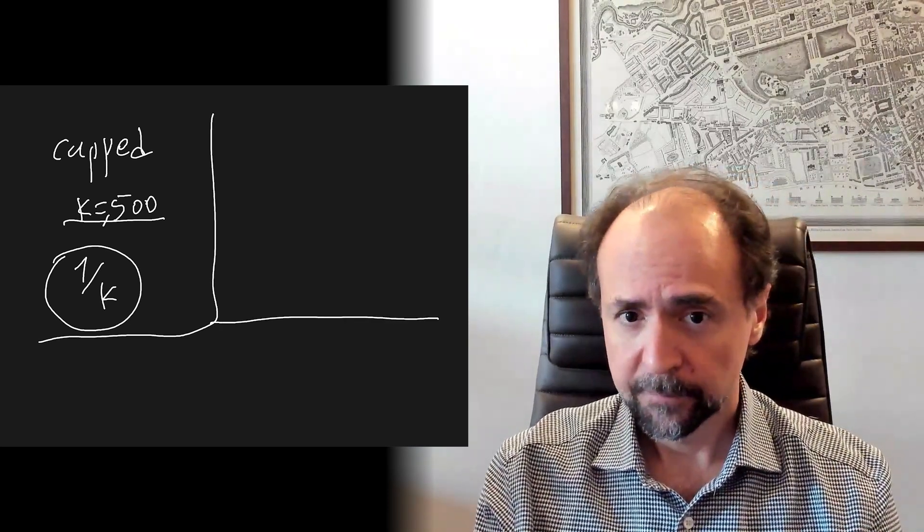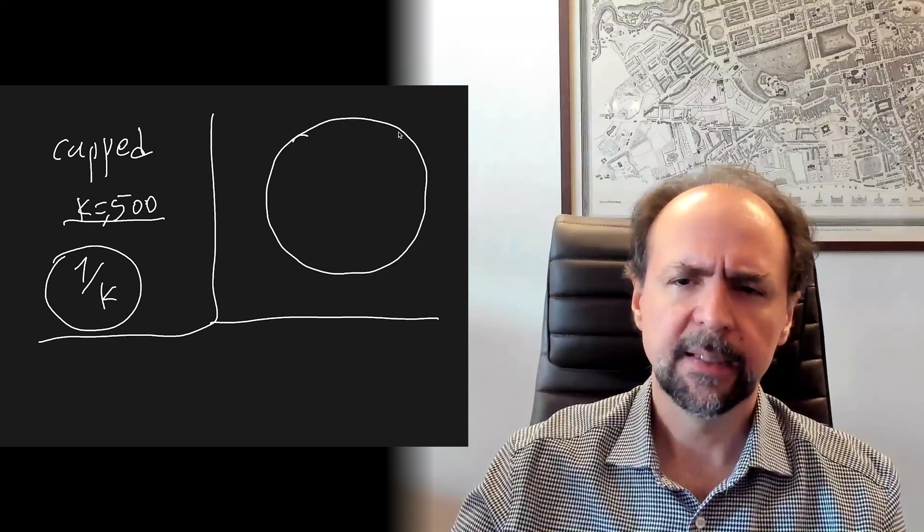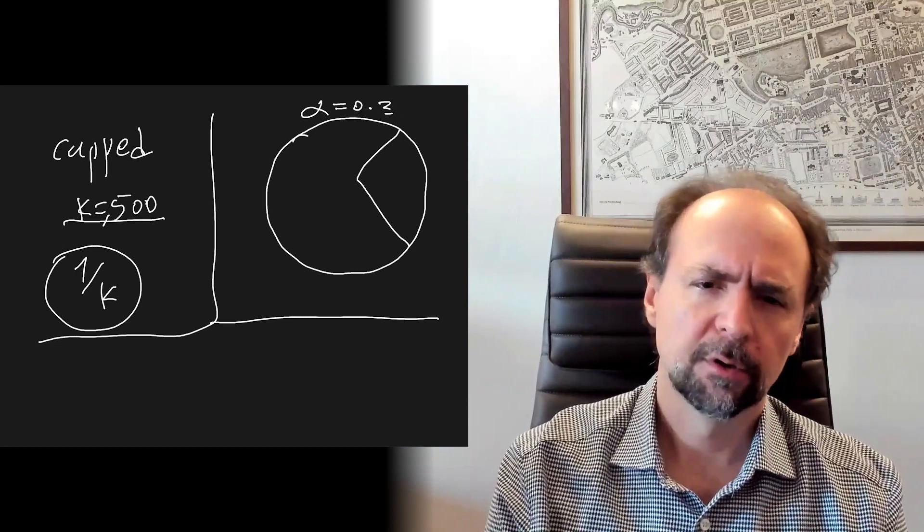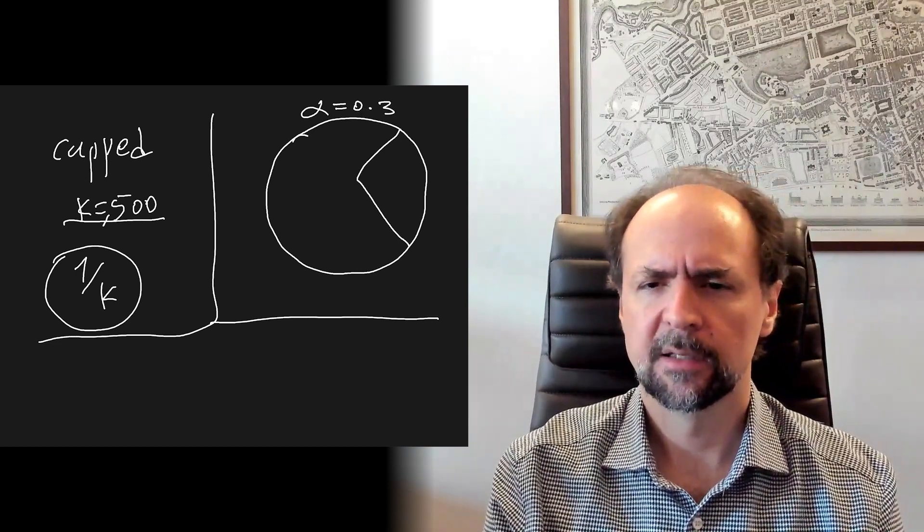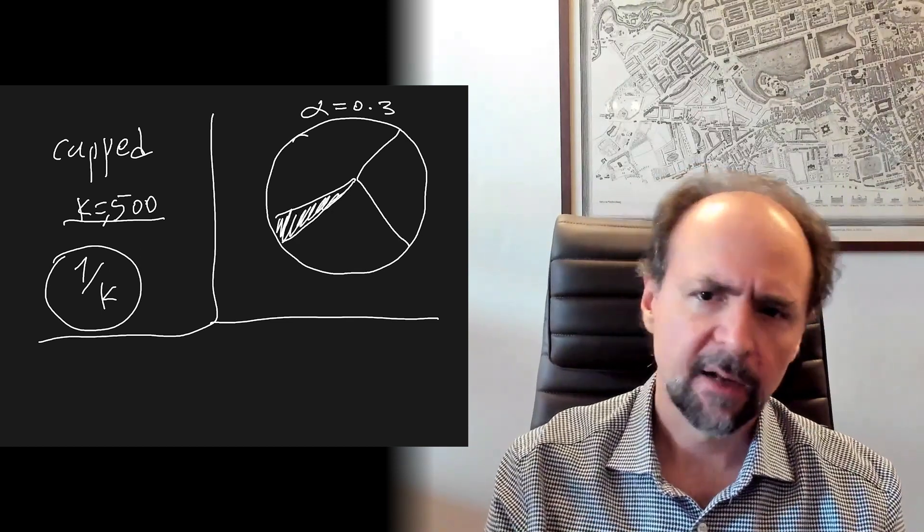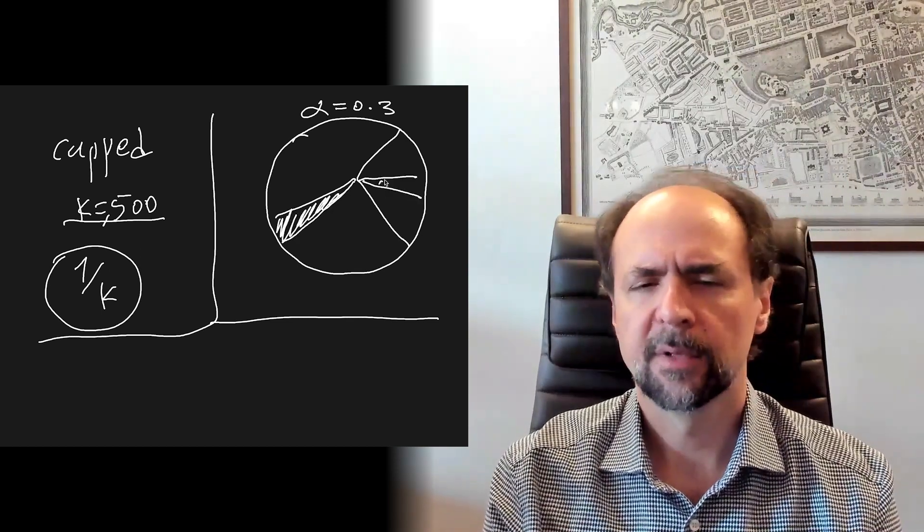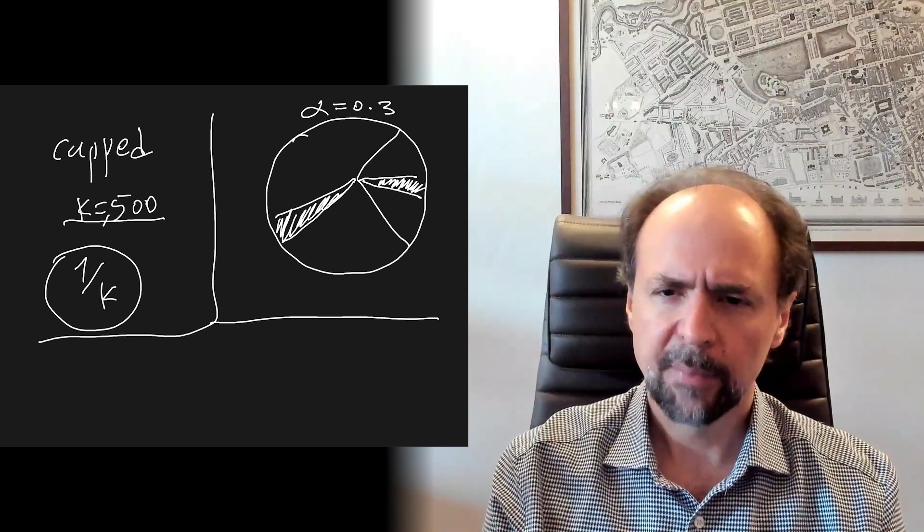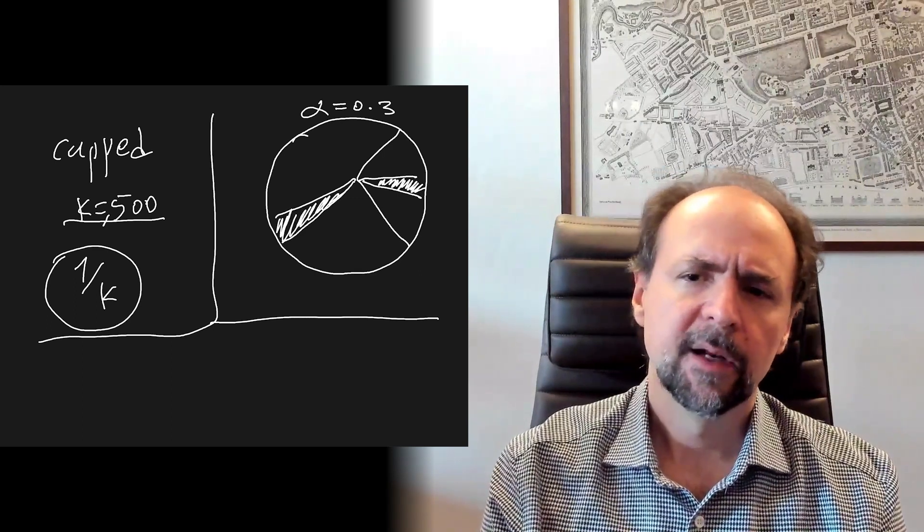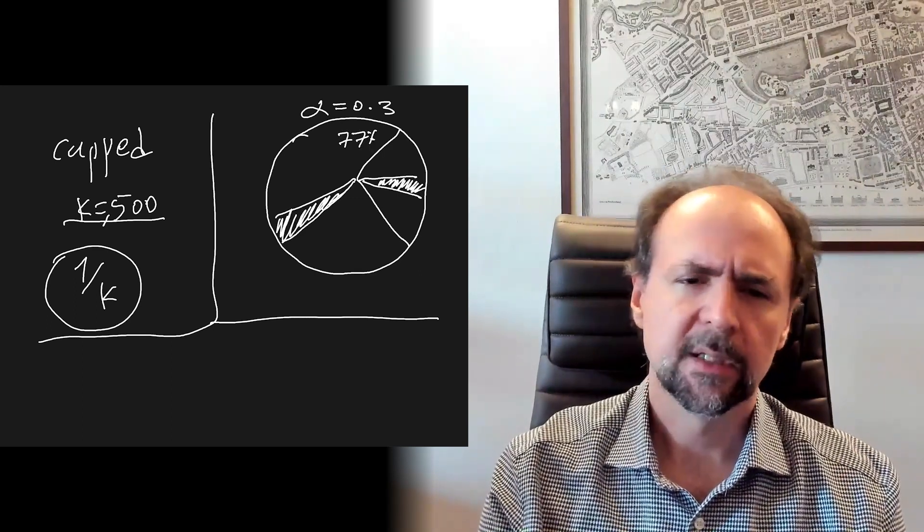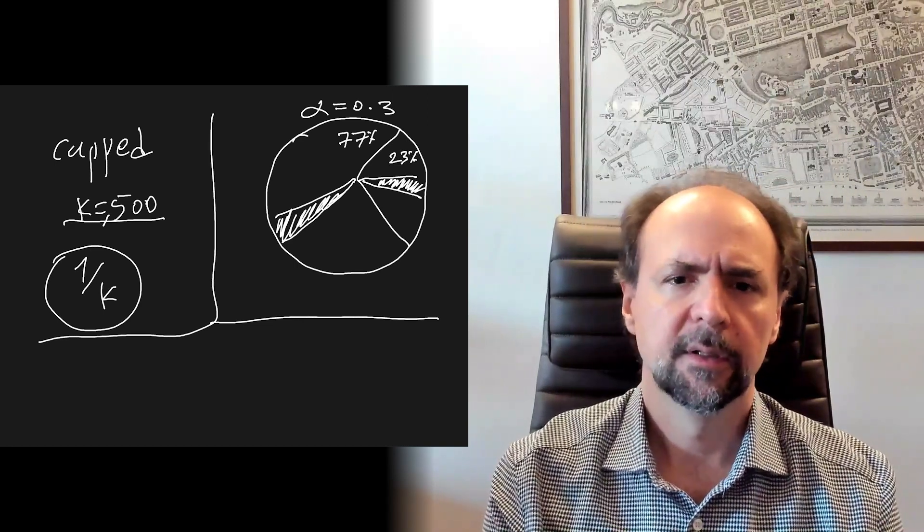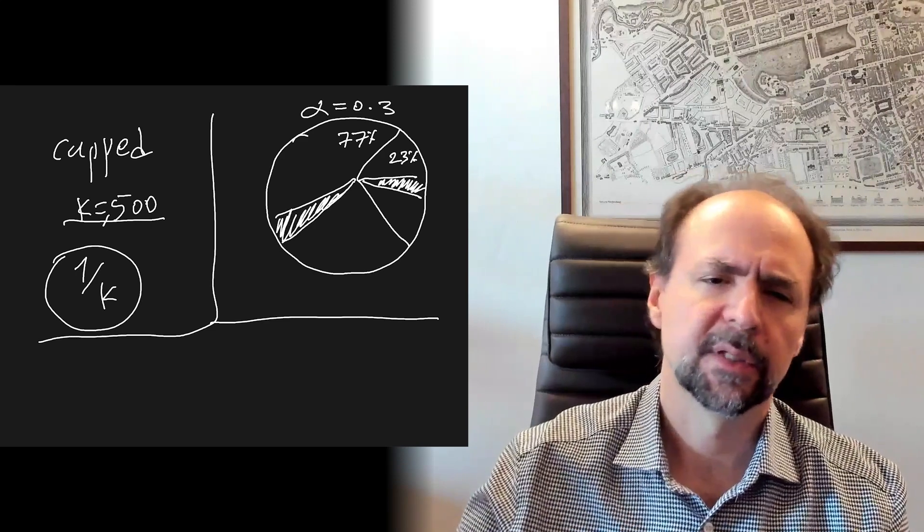The second is that available rewards are split in two big pieces, controlled by the parameter alpha, which now stands at 0.3. Each pool can claim a slice from the left piece and a slice from the right piece. With a current parameter choice of 0.3, the rewards pie is split in the two pieces of approximately 77% on the left and 23% on the right.